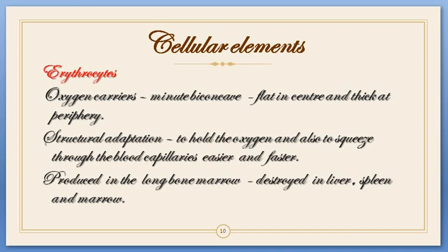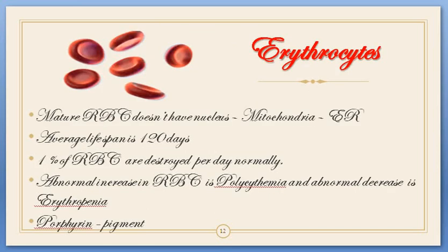The lifespan of RBC is about 120 days. The mature RBC doesn't have any nucleus. When an RBC is newly produced, it has a nucleus — young RBC possesses a nucleus. But the mature RBC doesn't have a nucleus, and it doesn't have any cell organelles like mitochondria and endoplasmic reticulum. There is a reason for all these things.